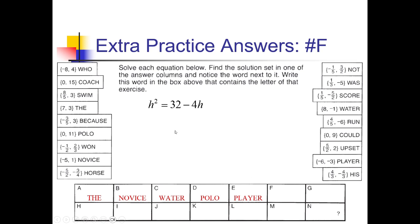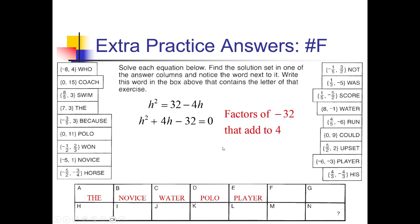On this one, I need to get it in standard form before I can use any kind of factoring. I'll keep h squared where it is and subtract everything over to the left side: positive 4h and then negative 32 equals 0. Squared coefficient of 1, so I can do regular factoring. Factors of negative 32 that add up to 4 — negative 4 and positive 8 works. So h minus 4, h plus 8. Zeroing each out: 4 minus 4 is 0, and then subtracting 8 gives negative 8. That's 'who' going in the F box.